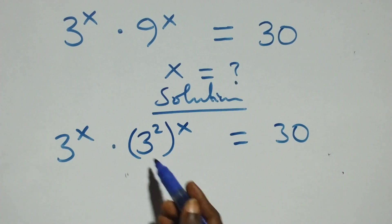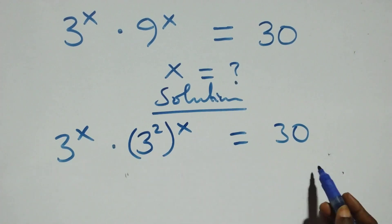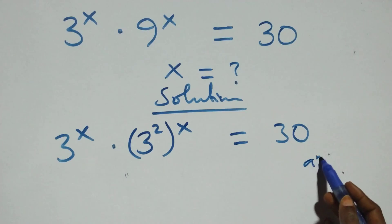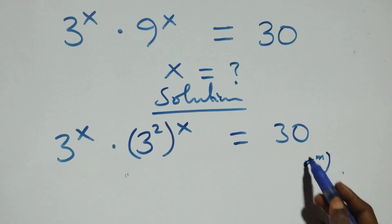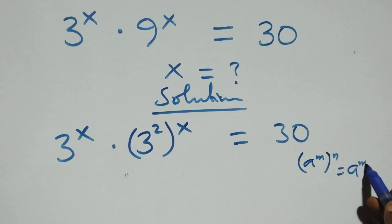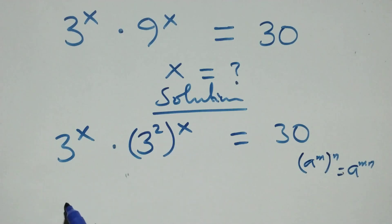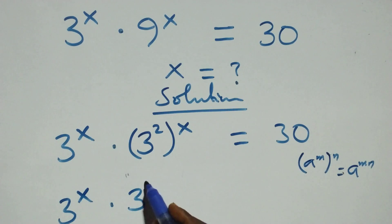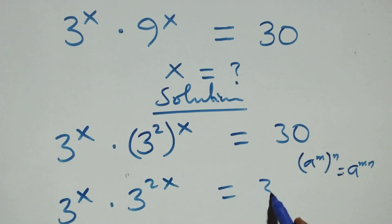Here, this follows a law of indices. When we have a raised to power m, raised to power n, this is the same thing as a raised to power m times n. Since this power multiplies, we have 3 raised to power x times 3 raised to power 2x equals 30 on this side.